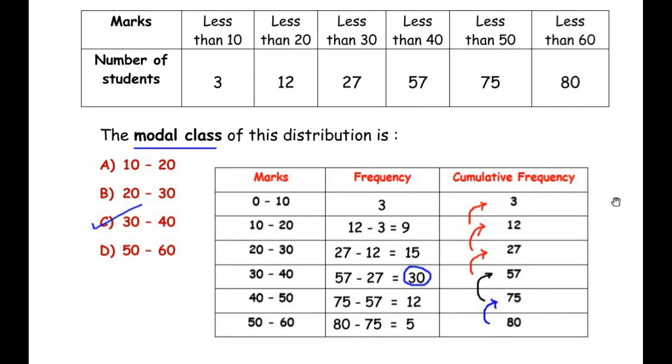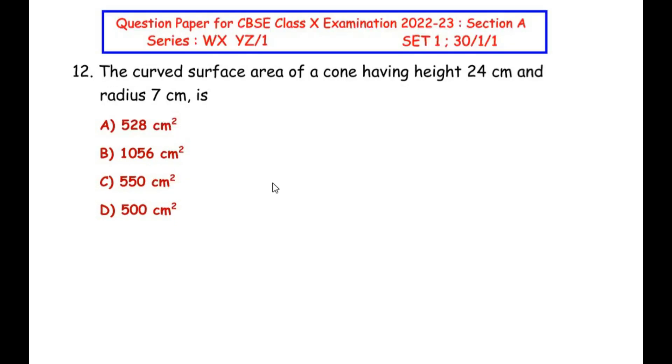Now the 12th question is from the surface areas and volumes chapter. The curved surface area of a cone having height 24 cm and radius 7 cm is. So let us understand this question by drawing a rough figure first.